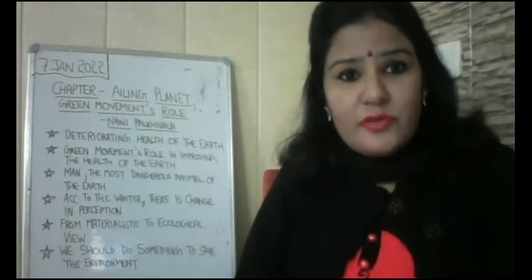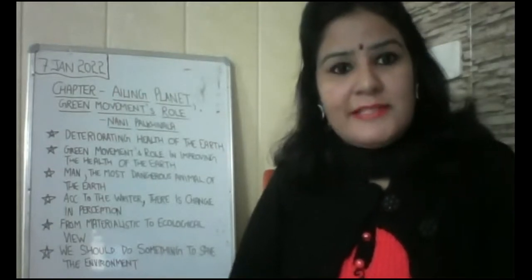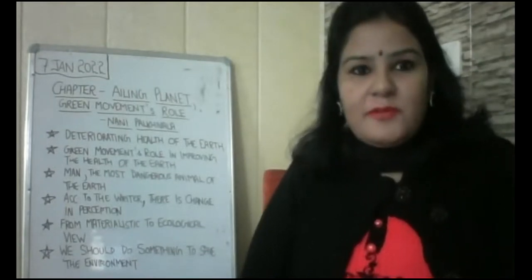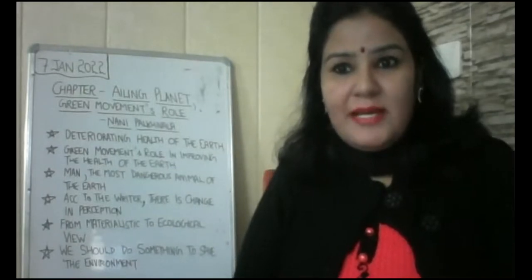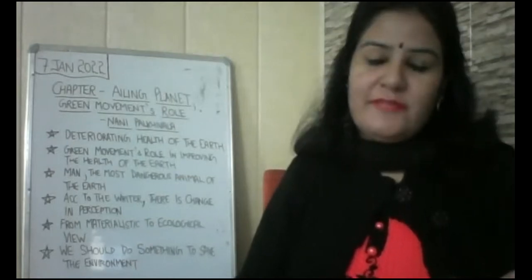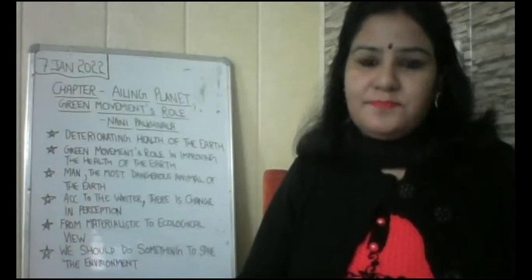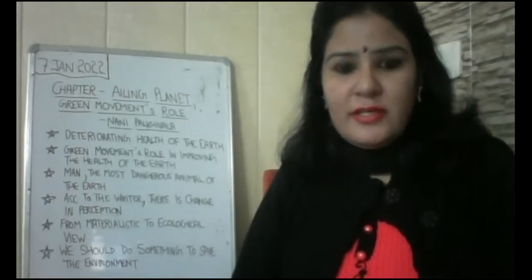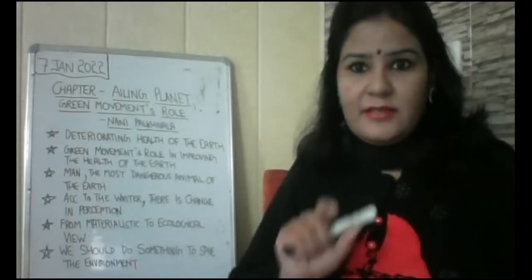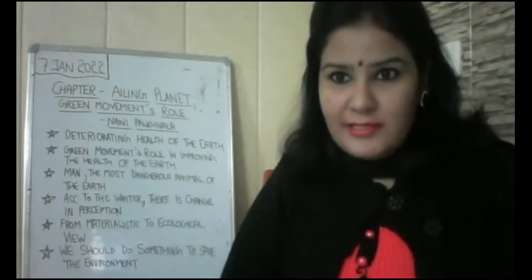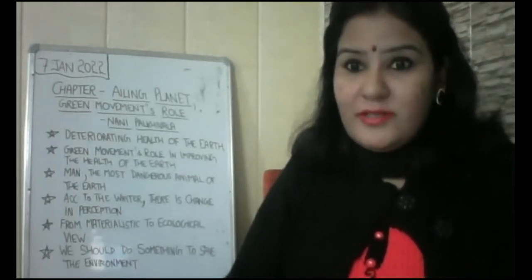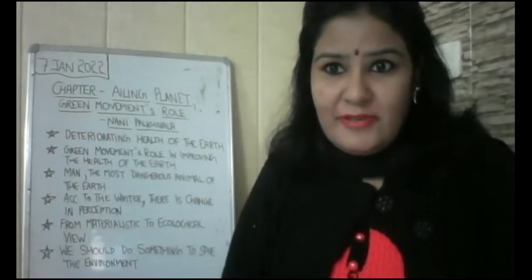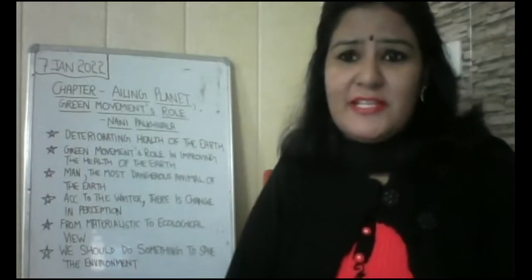Nani Palkiwala has mentioned that there is a zoo in Lusaka, Zambia. There is a cage, and when you look into the cage there is a big mirror, and the caption over the mirror says 'the world's most dangerous animal.' What does it mean? There is one zoo in which a mirror is placed — when you look at that cage, what does it mean?